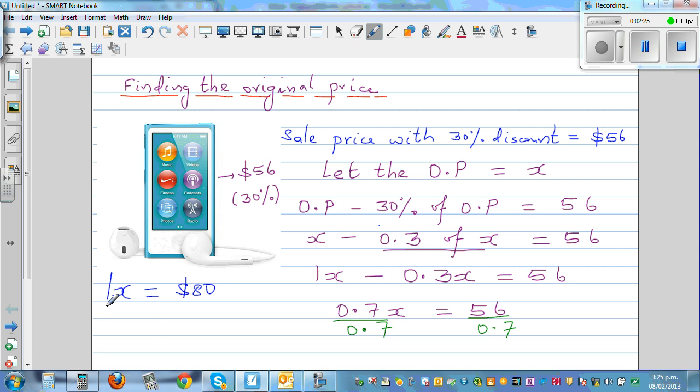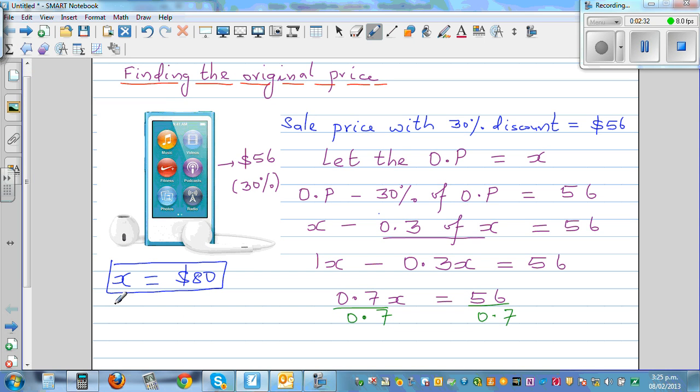Let's check the answer before thinking in a different way. So what is 10%? 10% of 80 is $8. So 30% is 3 times of this, which is $24. Just to check your answer. So 80 minus 24. 80 minus 20 is 60, and then take away 4, which is $56. So our answer is right.